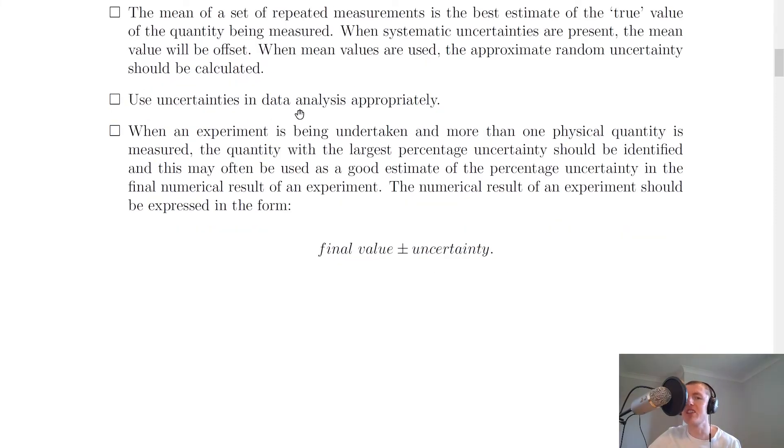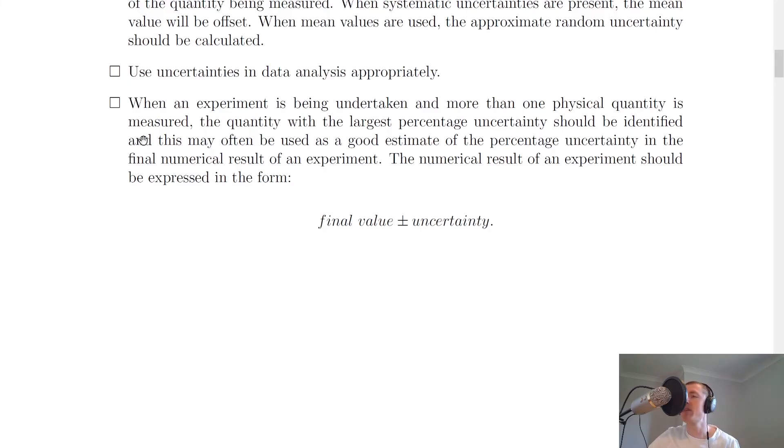You should also be able to use uncertainties in data analysis appropriately. And the last outcome here refers to combination uncertainties and it says that when an experiment is being undertaken and more than one physical quantity is measured, the quantity with the largest percentage uncertainty should be identified and this may often be used as a good estimate of the percentage uncertainty in the final numerical result of an experiment. The numerical result of an experiment should then be expressed in the form final value plus or minus the uncertainty. So all this is saying is what we saw when we did combination uncertainties. If we've got several variables with uncertainties then we need to determine the uncertainties in all of those variables first in percentage form and then we just choose the largest percentage uncertainty to be the uncertainty in our final result.